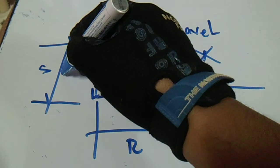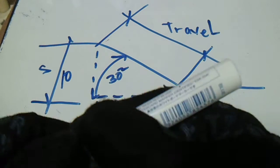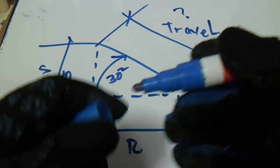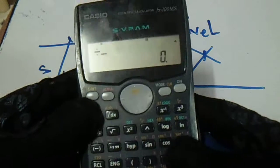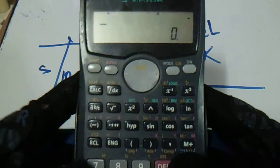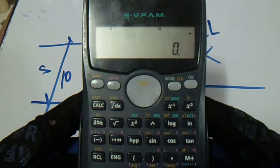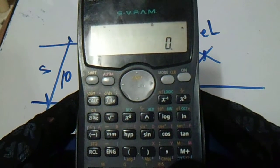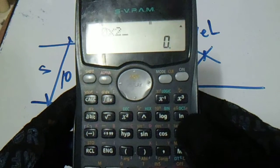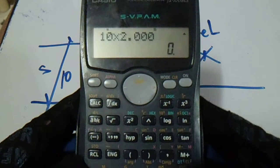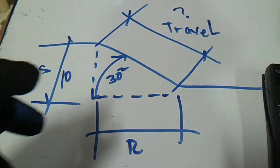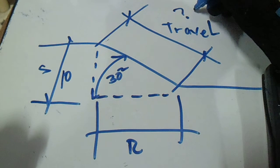Let's say we have a set of 10. We will get this travel. To get this travel, our given is set and degrees — so 10 — multiply it to 2.000. Our answer for the travel is 20.